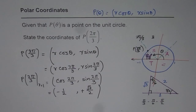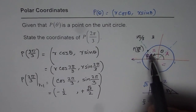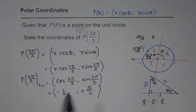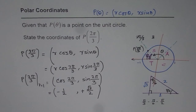I hope the steps are absolutely clear and you have understood how we can get a point on the unit circle. If the circle was not a unit circle, these values would be multiplied by the radius. Unit circle is radius 1, so it is minus half, plus square root 3 by 2 as the coordinate points for P of 2 pi by 3. I hope that is absolutely clear. Thank you and all the best.